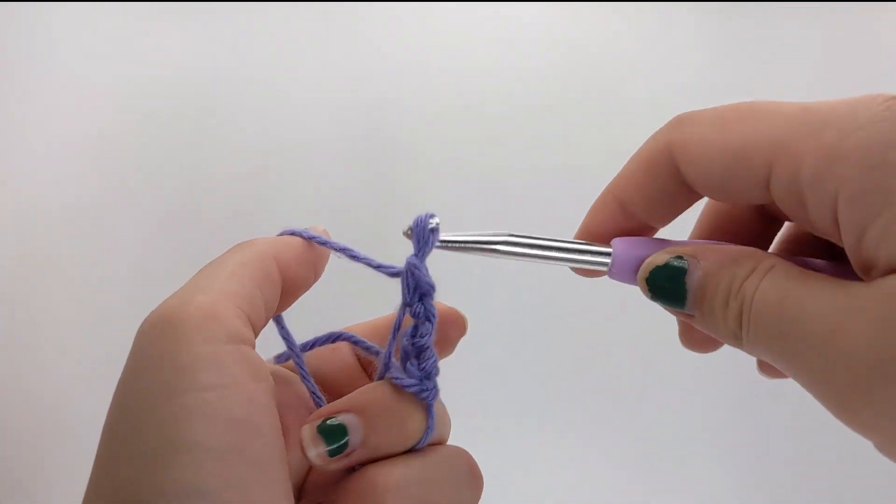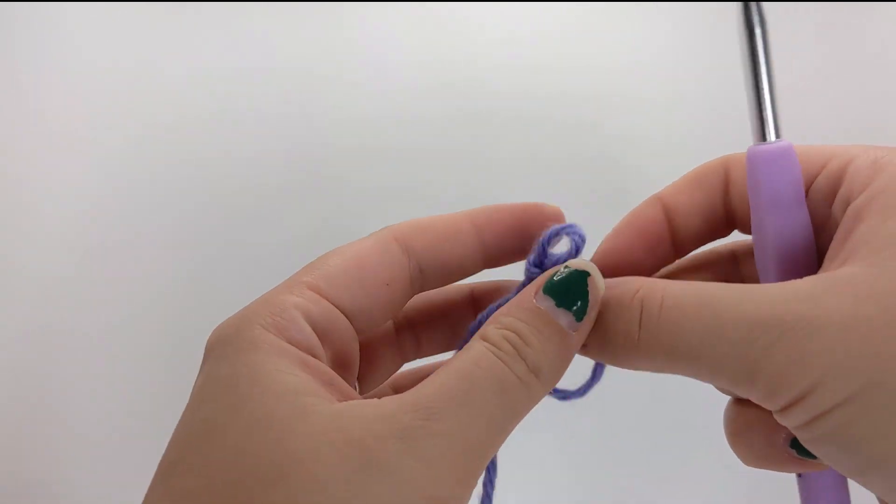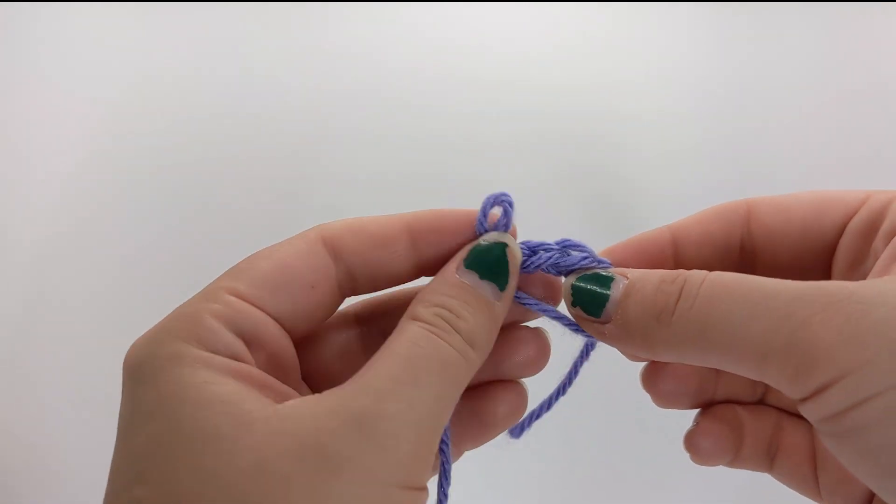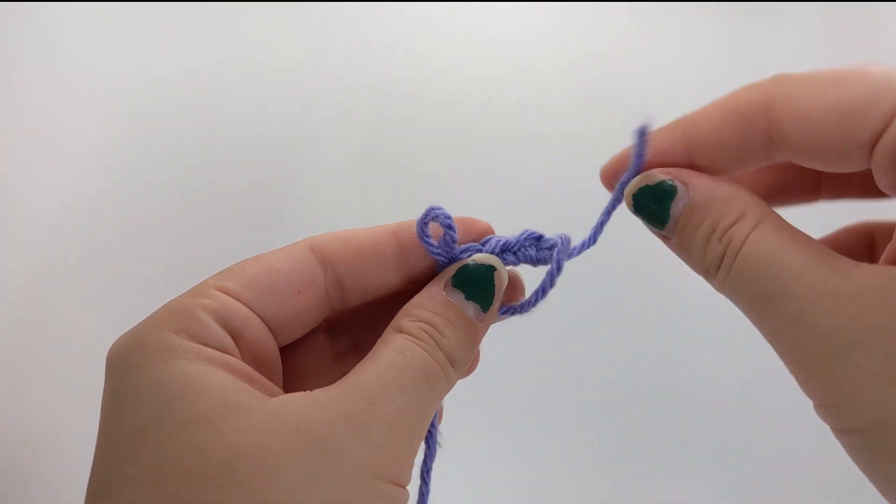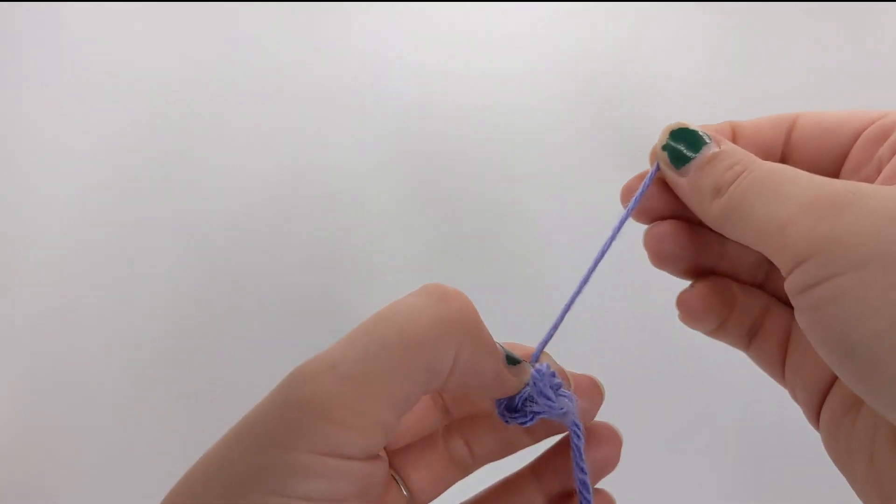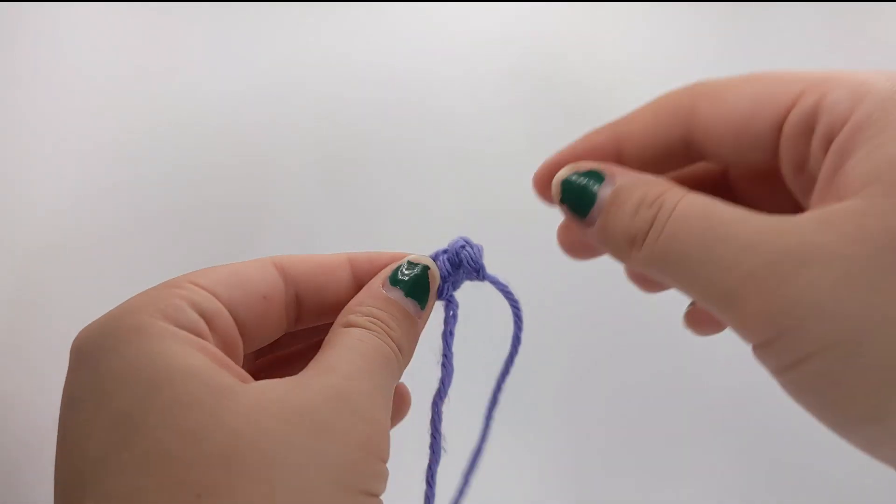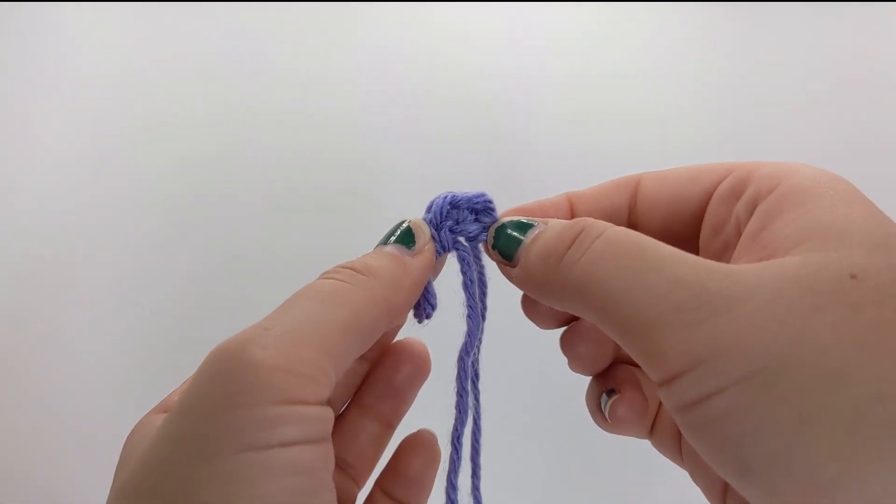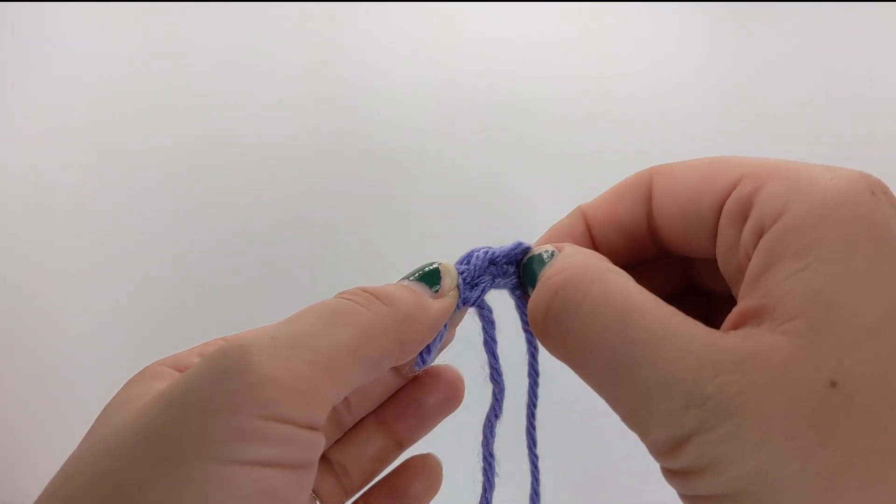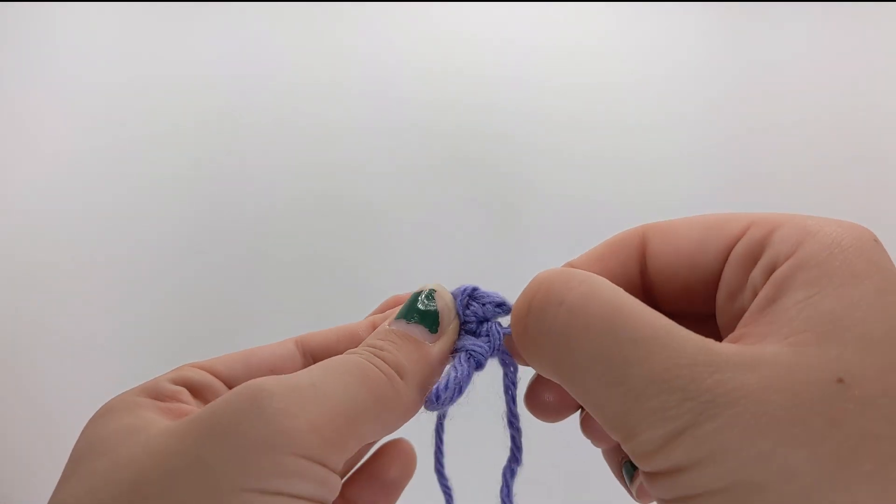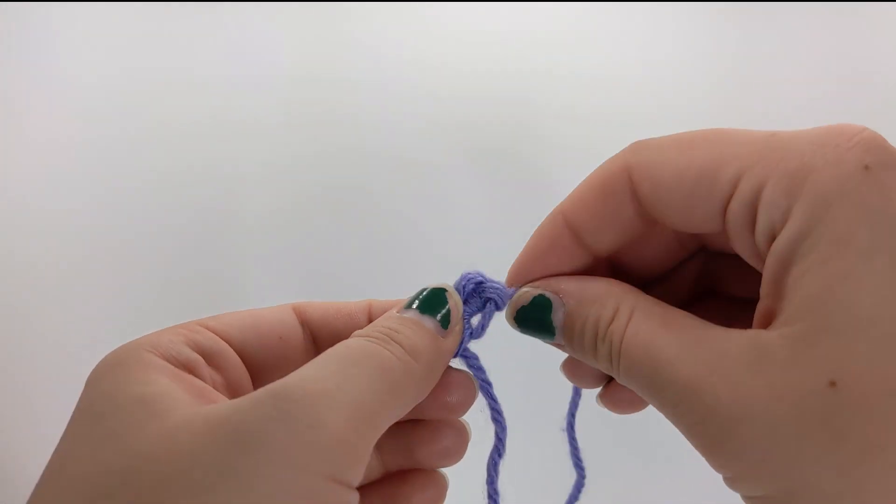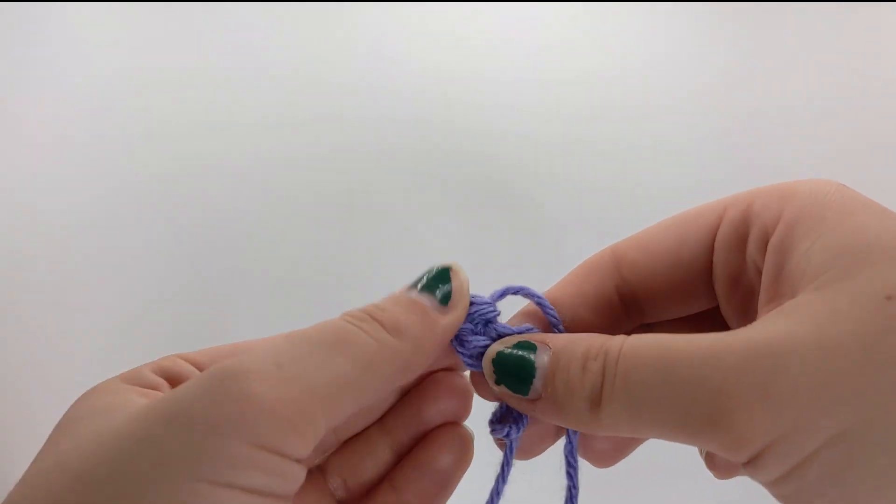All right. And then once you have however many you need, so I've got four here, let's say we're shooting for four. The thing that makes this ring magic and how you know you've done your magic circle correctly is that you can take the tail and when you pull on it, your ring should close up. So it's just your stitches now. And the ring is all closed. The hole's gone. And at this point, you can kind of pull it back open if you realize you forgot some stitches, but it should just close up nice and neat.